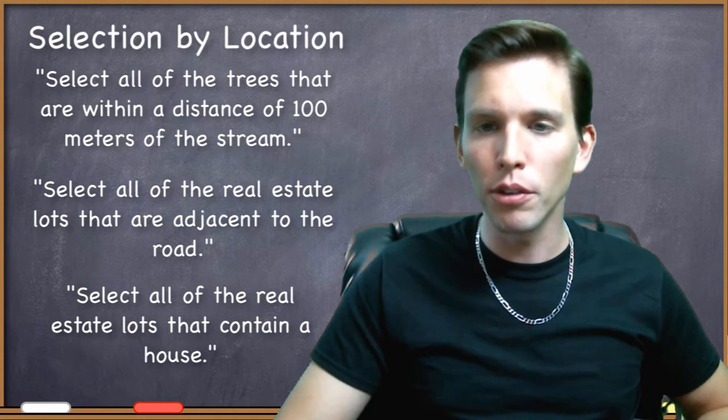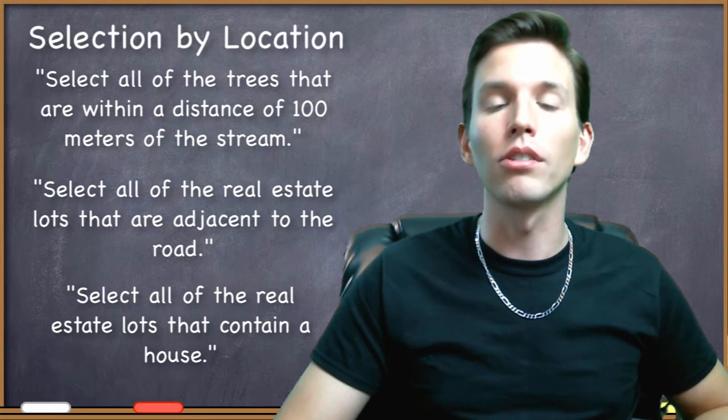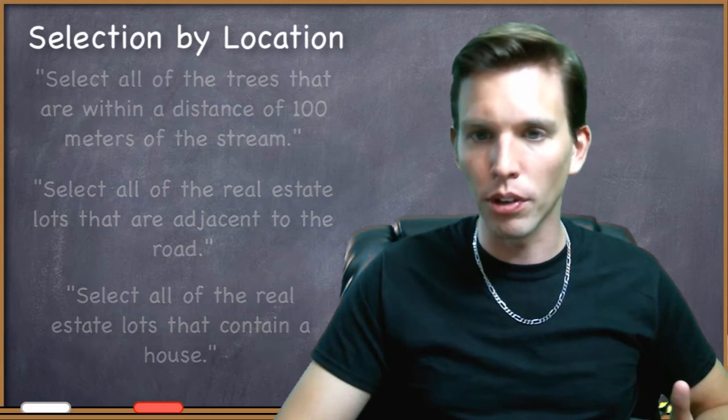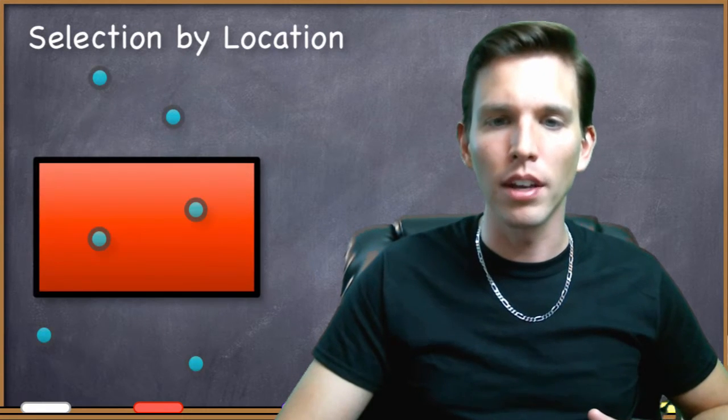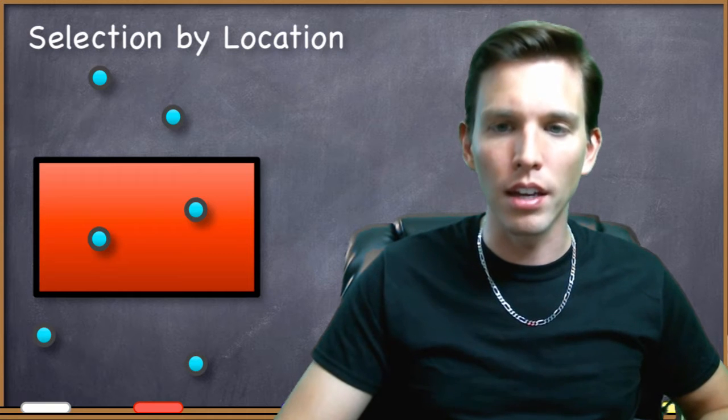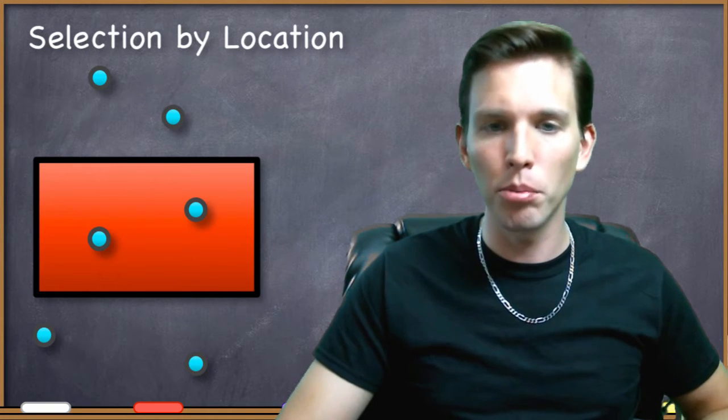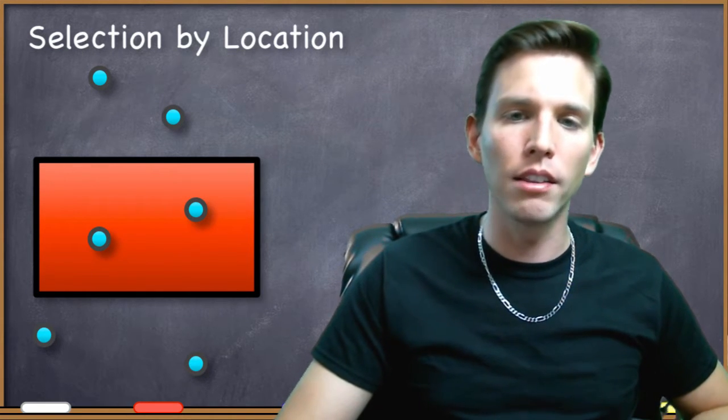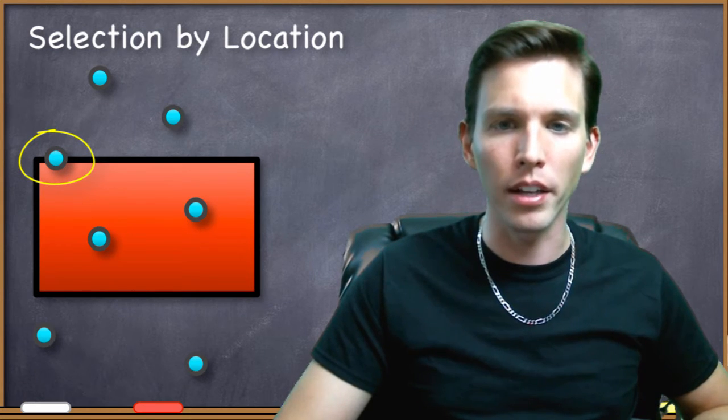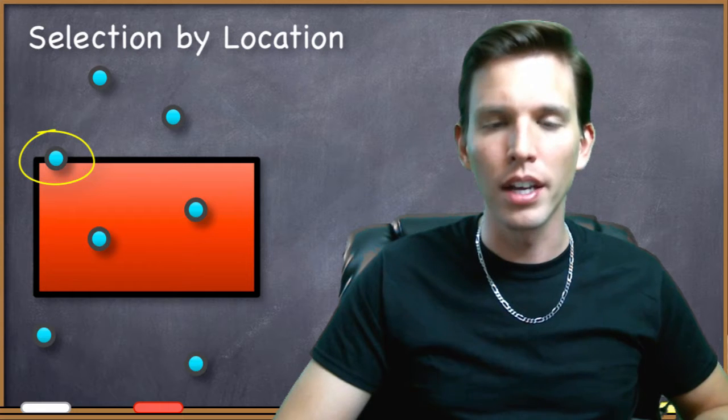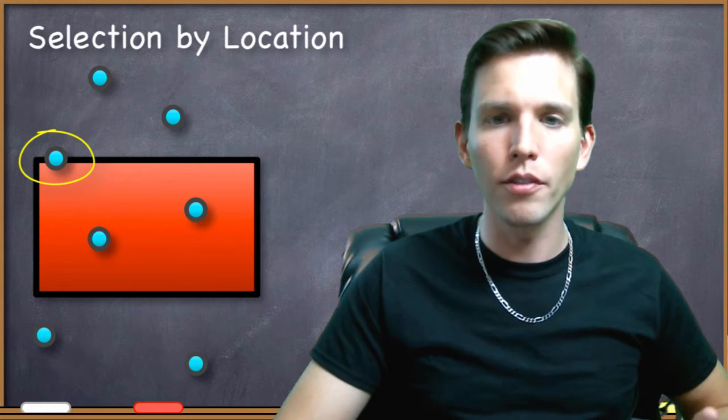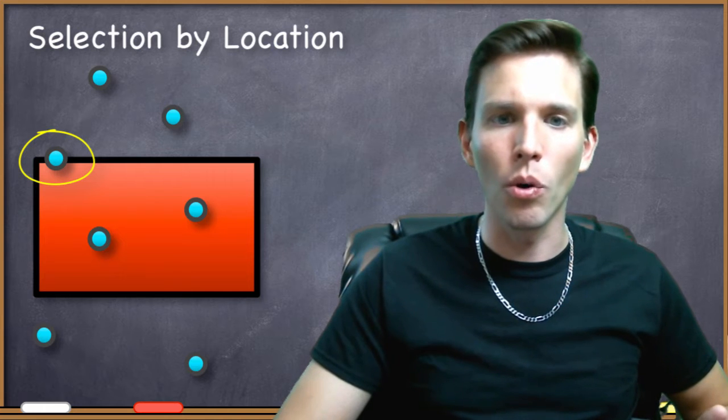There are a few situations where whether or not something satisfies the selection criteria might not be perfectly clear. Take this for example. Here we have some point and this polygon. We want all of the points that are within the polygon. That would be pretty simple. But what if I had this point? It's not clearly inside the polygon. Is it inside or out? Well, it's on the boundary. Is something that's on the boundary of a polygon inside or outside of it?